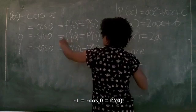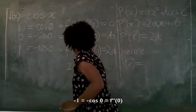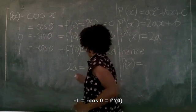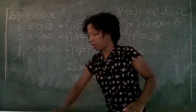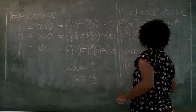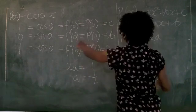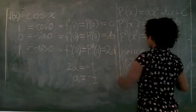Well, 2a is equal to negative 1, means that a is equal to negative 1 half. So, it's negative 1 half x squared. b is equal to 0, so plus 0, plus c, which is 1.